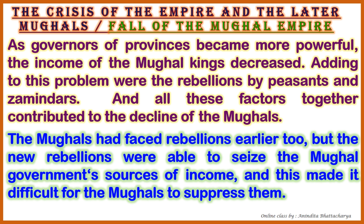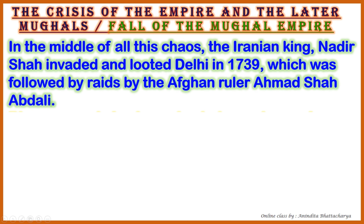The Mughals had faced rebellions earlier too, but the new rebellions were able to seize the Mughal government's sources of income, which made it difficult for the Mughals to suppress them. In the middle of all this chaos, the Iranian king Nadir Shah invaded and looted Delhi in 1739, which was followed by raids by Afghan ruler Ahmad Shah Abdali.